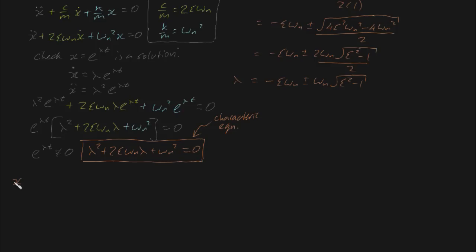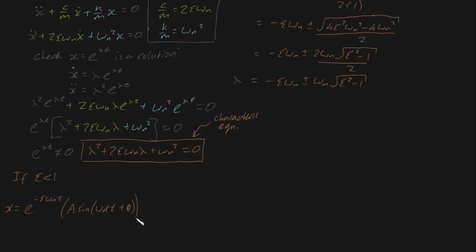First, consider the case where ζ is less than 1. If ζ < 1, the square root term is negative, so our roots will be complex. As it follows, x equals e^(−ζωₙt) times A·sin(ωd·t + φ), where A and φ are constants. This is what we call underdamped motion.